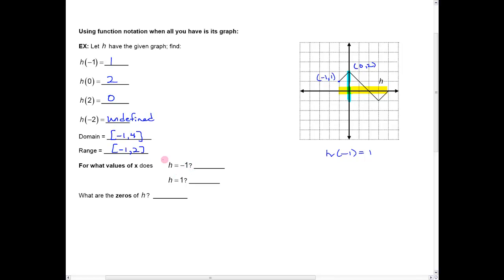Another question is for what values of x does h equal negative 1? Well, this is saying, okay, the output's negative 1. So I want to look at the y value negative 1. You can see right here, this is ordered pair 1, 2, 3, negative 1. And so the x value of 3 has an output of negative 1.